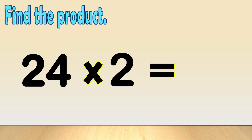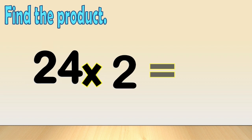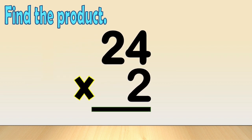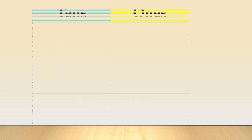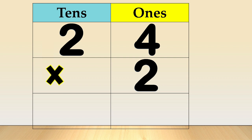Another example. Find the product: 24 times 2. First, arrange the numbers in columns like this. Place the digit of the number in a column based on its place value. 24 times 2.